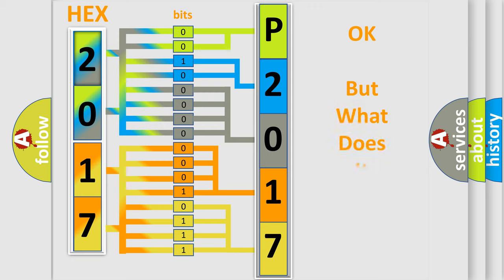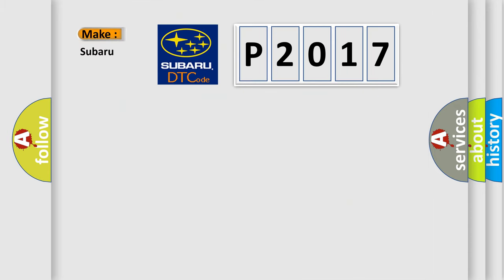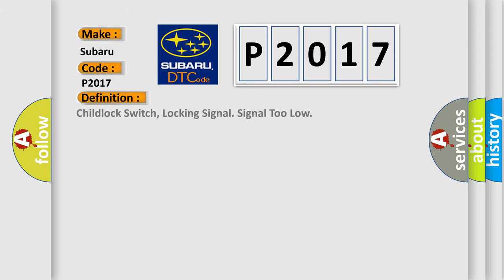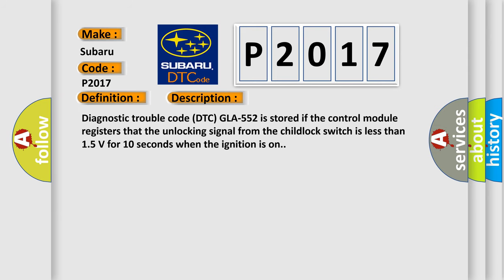The number itself does not make sense to us if we cannot assign information about what it actually expresses. So, what does the diagnostic trouble code P2017 interpret specifically for Subaru car manufacturers? The basic definition is: Child lock switch, locking signal too low. Diagnostic trouble code DTC P2017 is stored if the control module registers that the unlocking signal from the child lock switch is less than 1.5 volts for 10 seconds when the ignition is on.